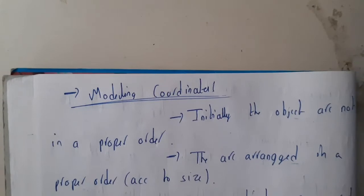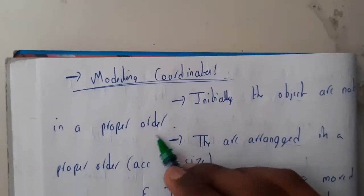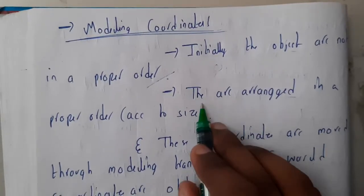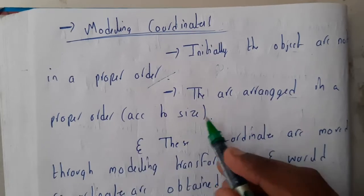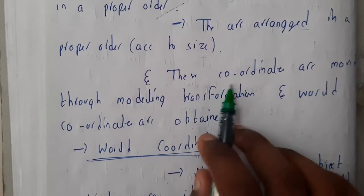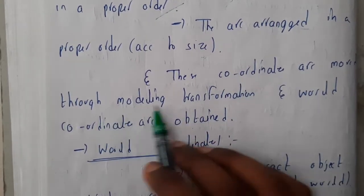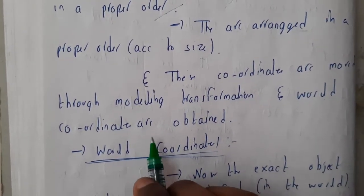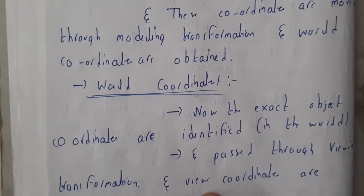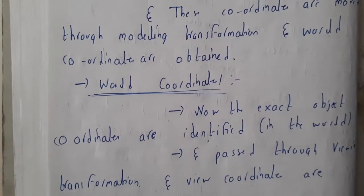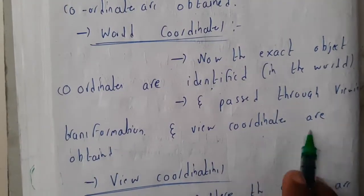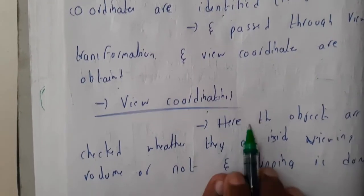Now let us go through the formal points. Modeling coordinates: initially the objects are not in a proper order — sizes and heights vary. They are arranged properly and the coordinates are moved through the model matrix to obtain world coordinates. World coordinates: the exact object coordinates are identified. Once your friends' exact positions are known, they are passed through the transformation and view coordinates are obtained.